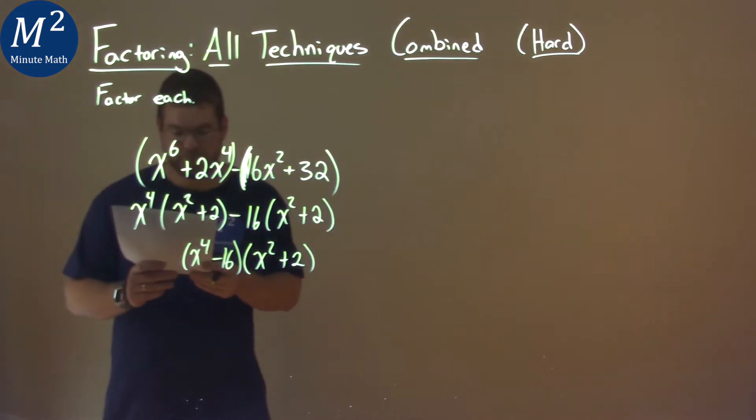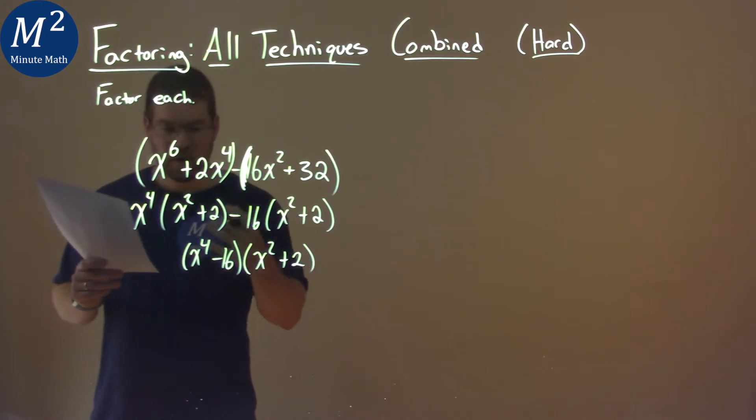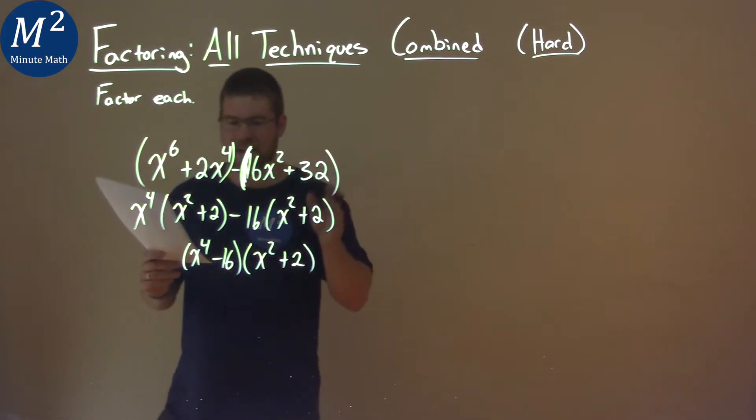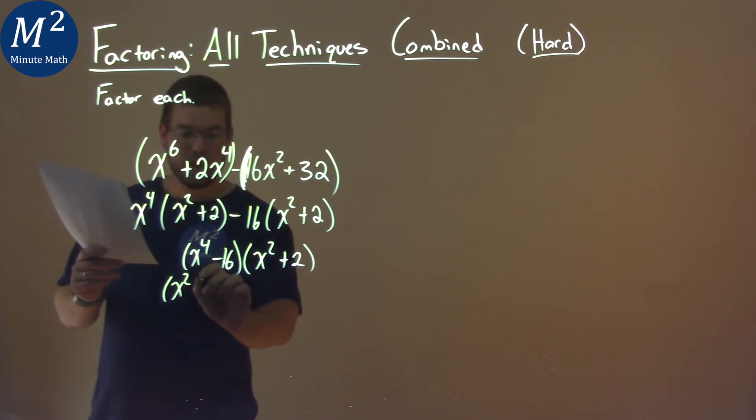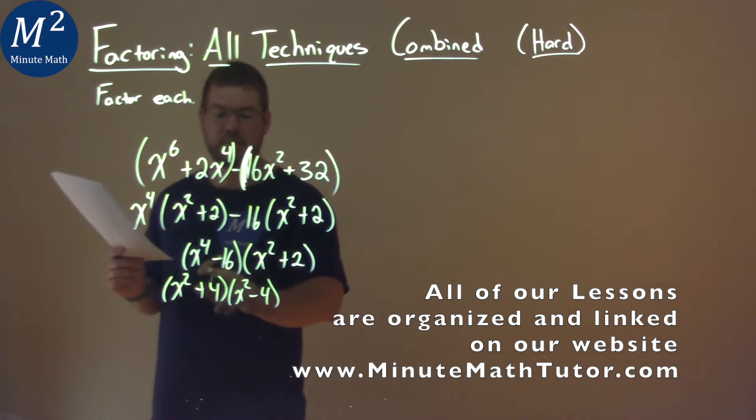But again, we're not done. The x to the 4th minus 16 is a difference of cubes. Oh, sorry, not difference of cubes. My apologies. I got ahead of myself. They're not cubes, because the x to the 4th, it's in quadratic form. So this factors down to be an x squared plus 4 times an x squared minus 4. We can see that 4 times negative 4 is negative 16. But when we add them, they become 0, which is the b value. It's not there.